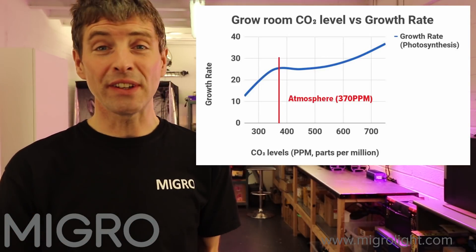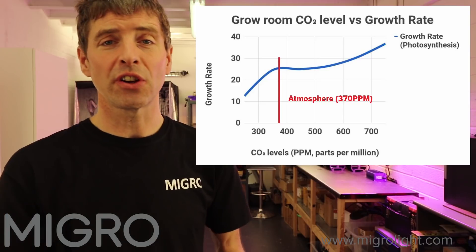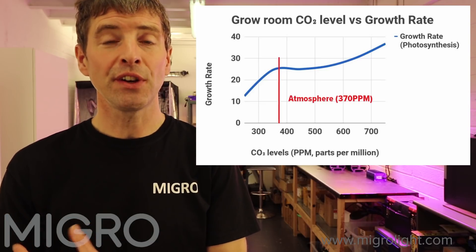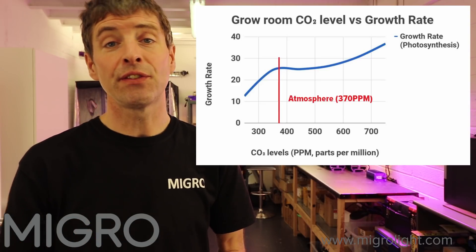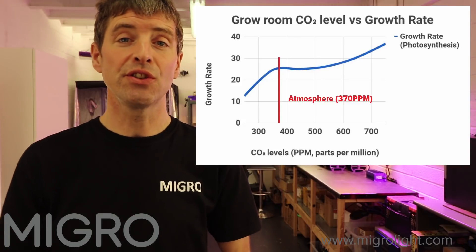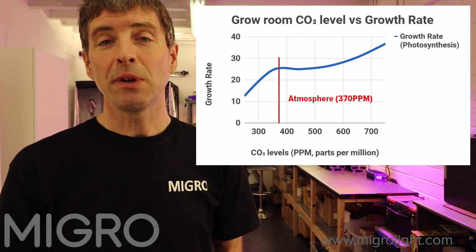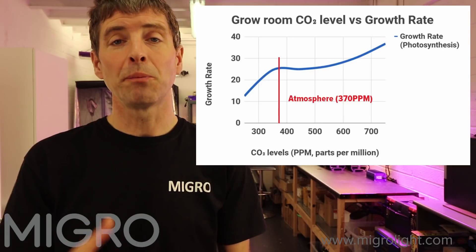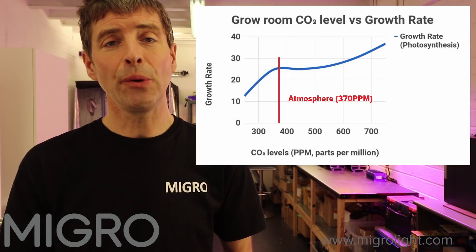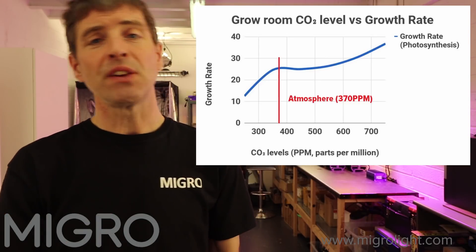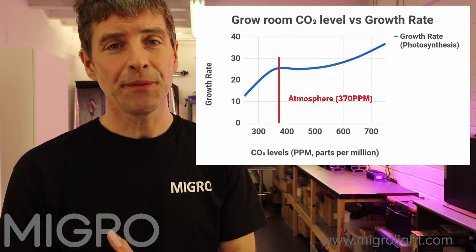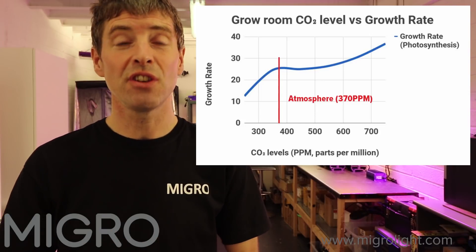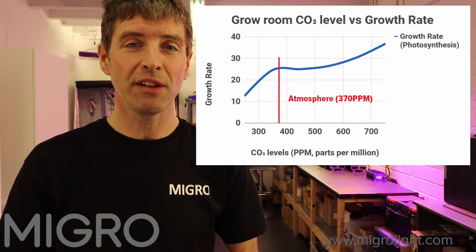The difficulty with using this system — drawing fresh air in and expelling it out into the atmosphere — is it's very hard to increase the CO2 level, because if you input more CO2 into the grow area it's only going to get drawn out just as quickly, making it almost impossible to artificially raise CO2 levels.